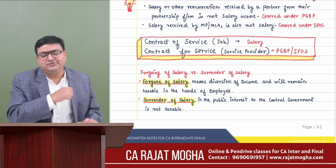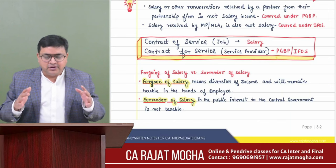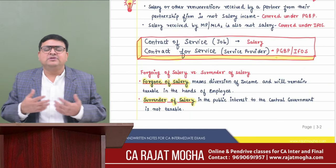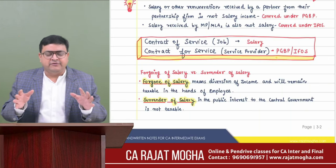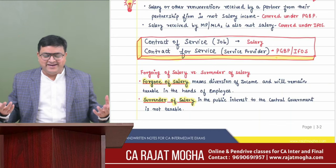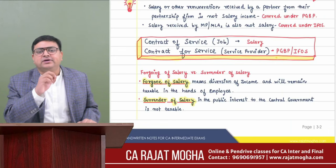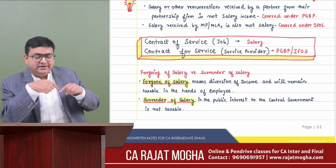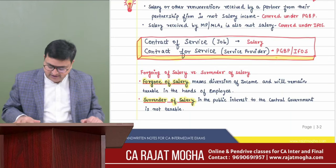Surrender of salary is different — it is when you say 'I don't want salary; I will work for free.' You don't direct the employer to pay anyone else; you simply say you won't take the salary. Surrender of salary is not taxable, because in this case the salary is not getting due in your hands. In forgoing, the salary was getting due and you were diverting it — that is taxable. In surrender, salary never gets due to you — so it is not taxable.